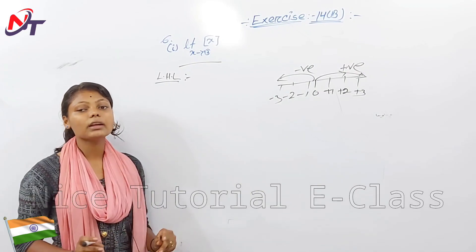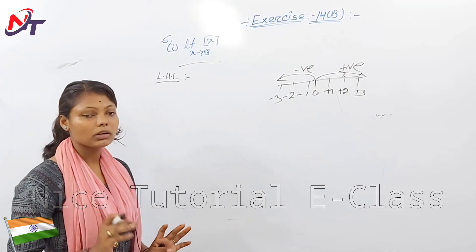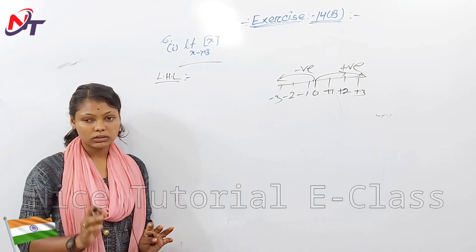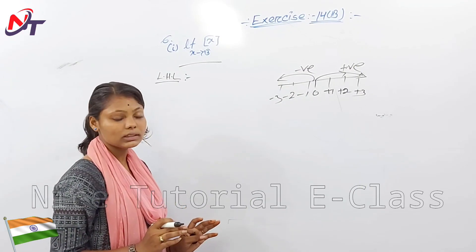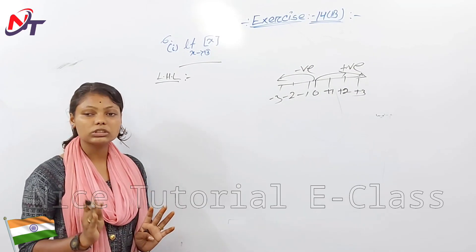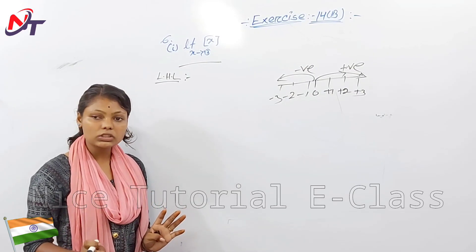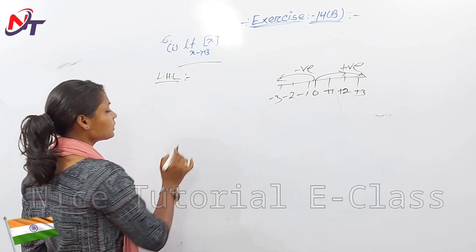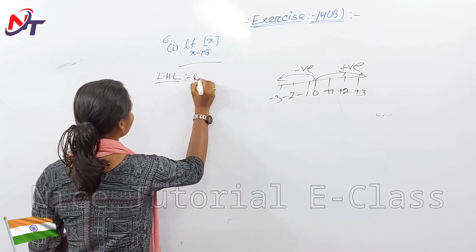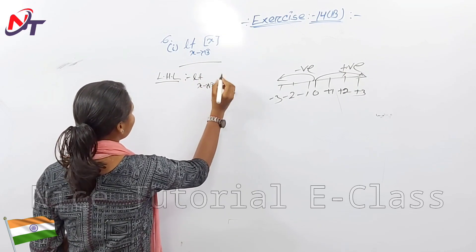The limit as x tends to a minus of f(x) is equal to the limit as h tends to 0 of f(a minus h). This is the left-hand limit formula. Now, limit x tends to √3 minus bracket x.